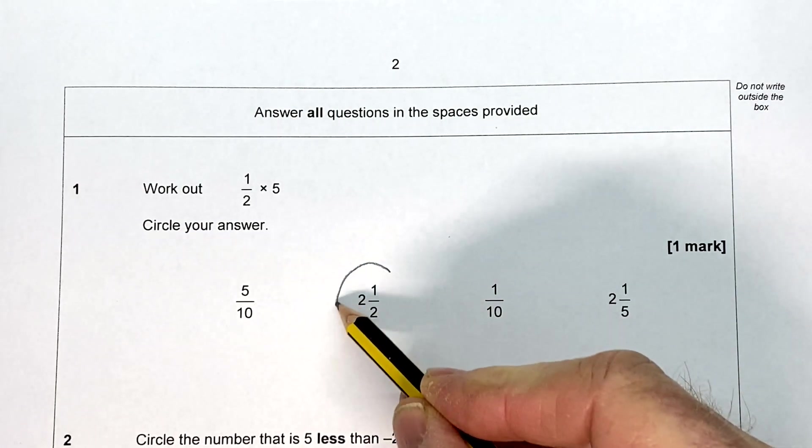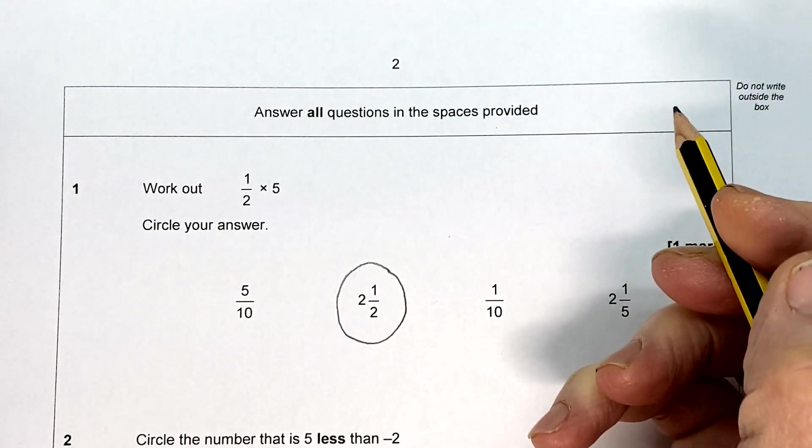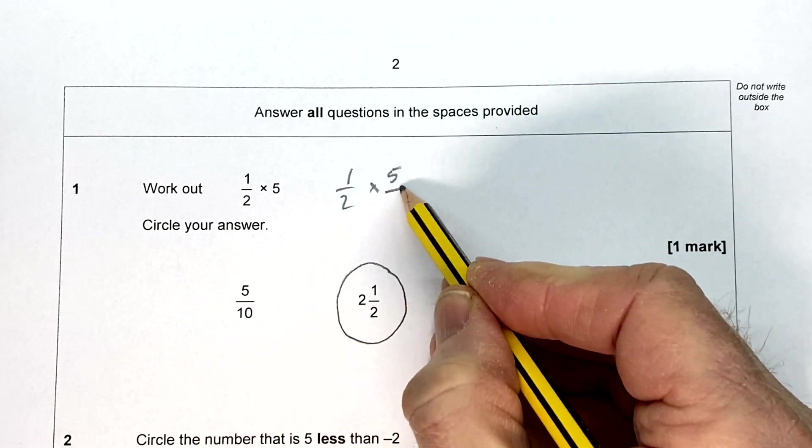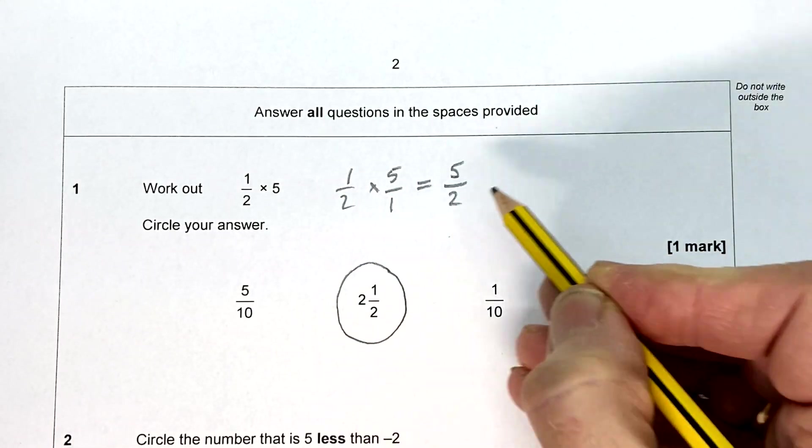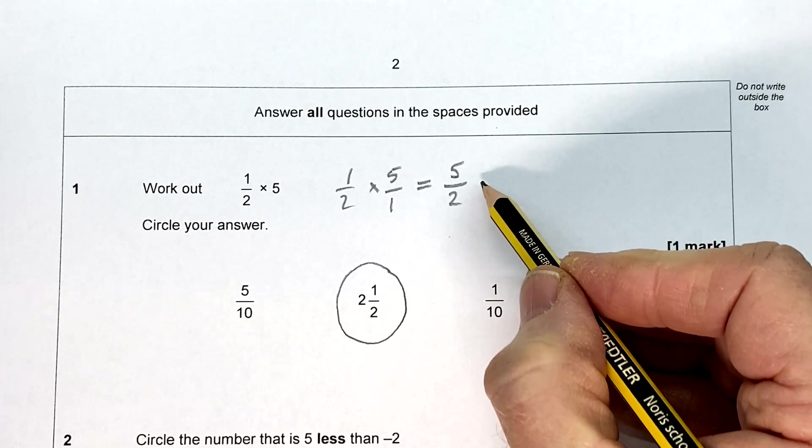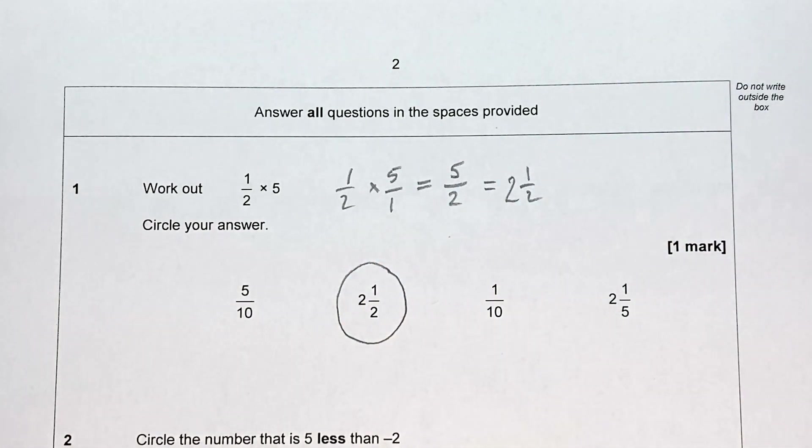So we've already found the answer. But your teacher might have shown you a more mathematical way of doing it, and that would be to say, well that's a half times five over one. One times five is five. Two times one is two. So that's five over two. And five over two is an improper fraction, which we know is two and a half. So that's the second way of finding it.